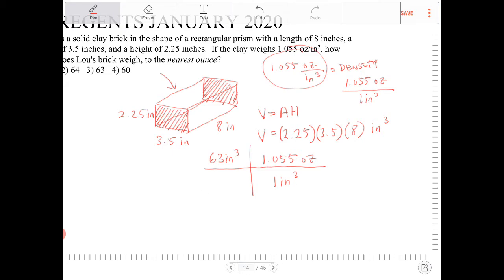These are thought of as fractions. So if I have 63 inches cubed over 1, which doesn't have a unit, multiplied by 1.055 ounce per 1 inch cubed, the inches will then cancel and I want to be left with my value in ounces.